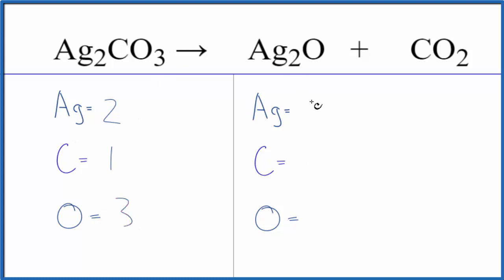Product side, we have two silver atoms, we have one carbon, then we have this one oxygen here, and these two oxygens here. Don't forget those. So we have a total of three oxygen atoms.